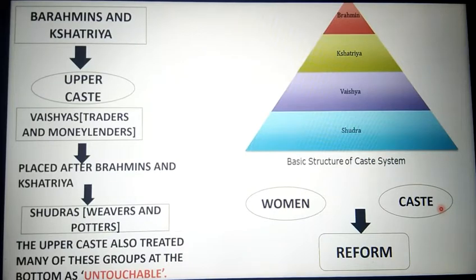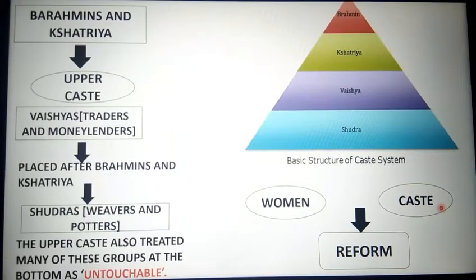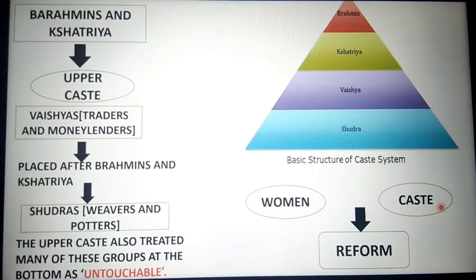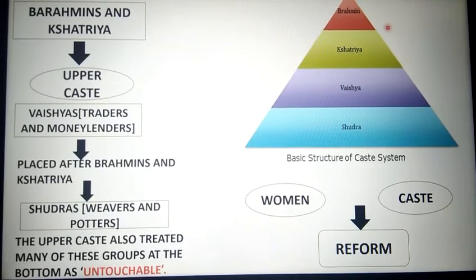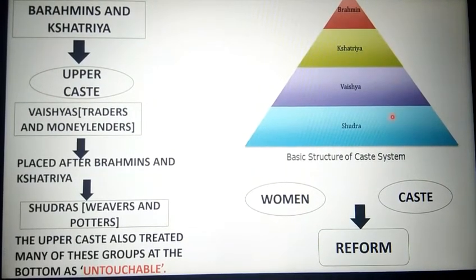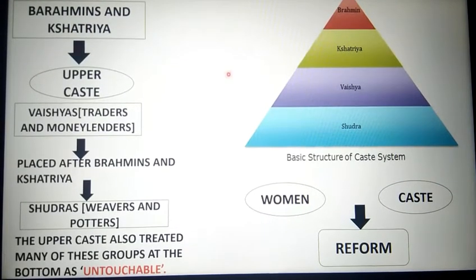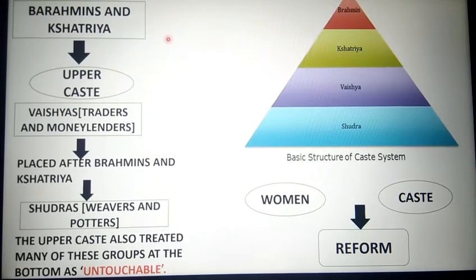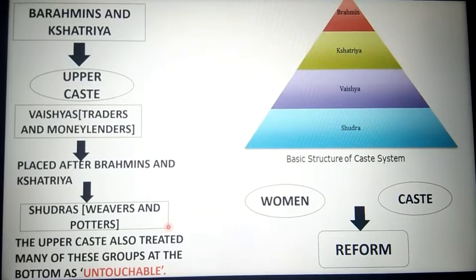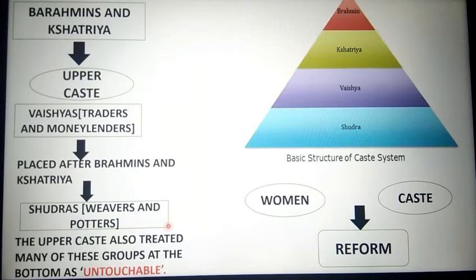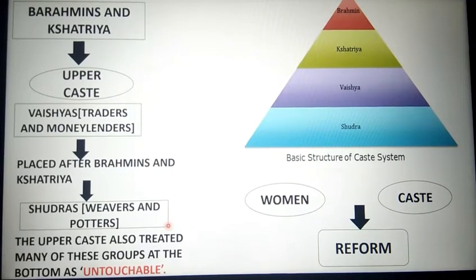After this we'll talk about women's reforms and the caste system — how women were differentiated on different lines. If I talk about the basic structure of the caste system: at the top were Brahmins — the upper caste — and Kshatriyas, then came the Vaishyas who included traders and money lenders, and then the Shudras who included weavers and porters. Upper-caste people — Brahmins and Kshatriyas — treated Shudras as untouchable, maintaining no relations with them at all.